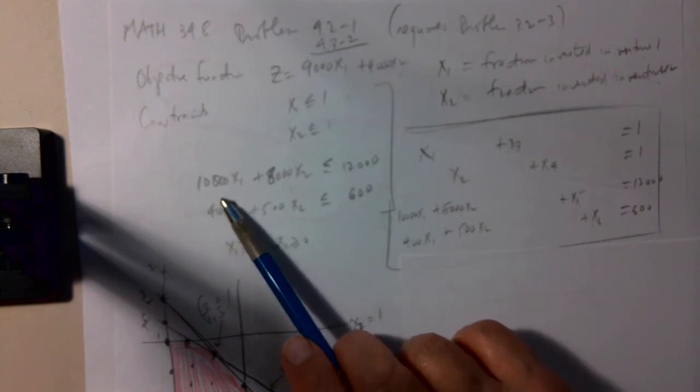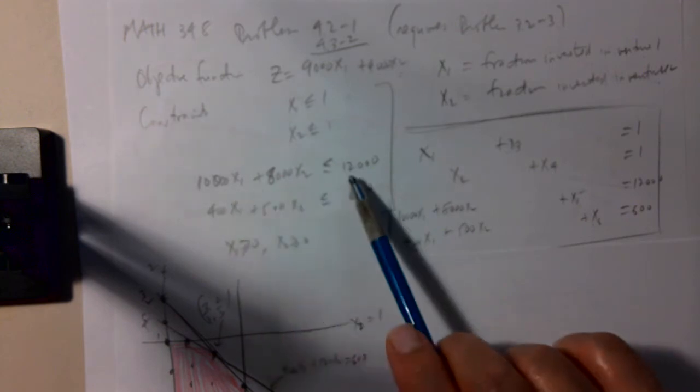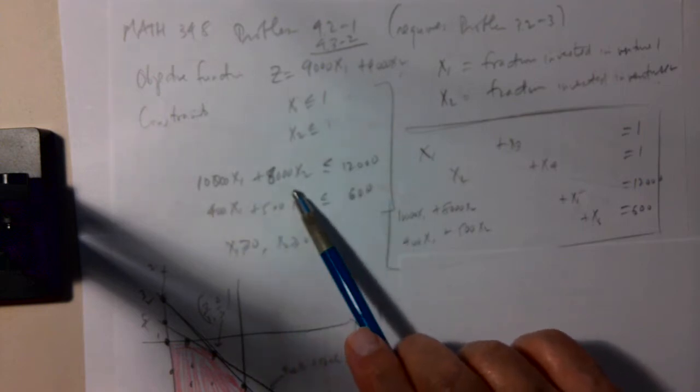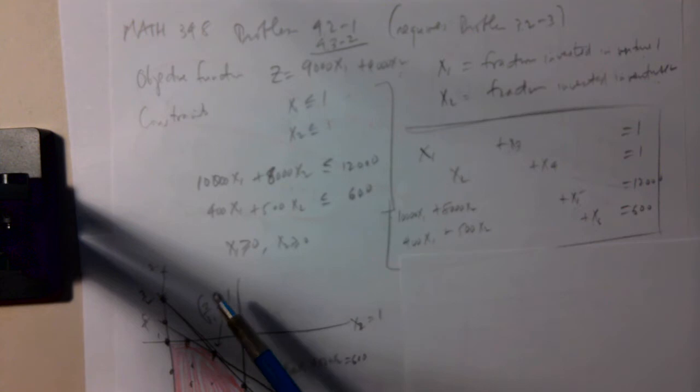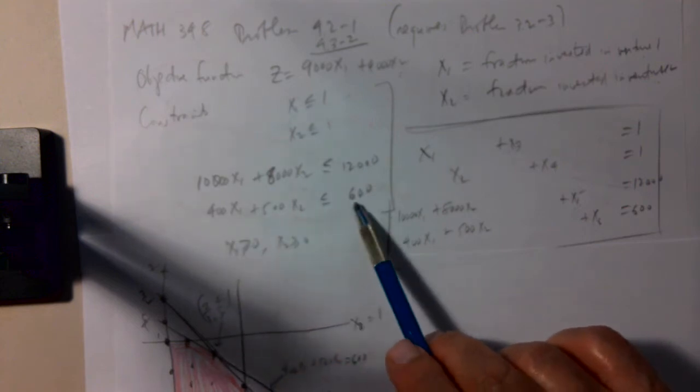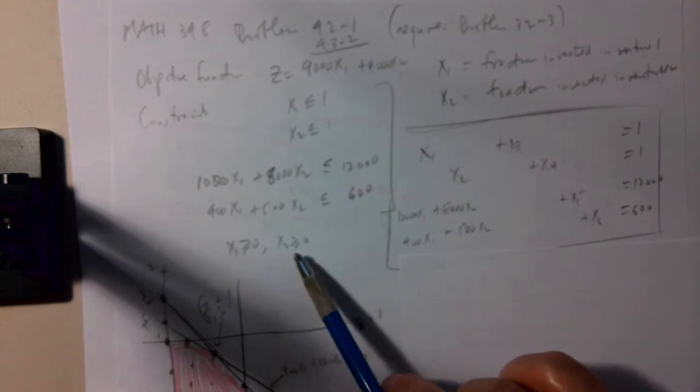X1 is at most 1, and X2 is at most 1. There was an amount of money you could invest, which was at most 12,000. 10,000X1 plus 8,000X2 is less than or equal to 12,000. 400X1 plus 500X2 is less than or equal to 600.